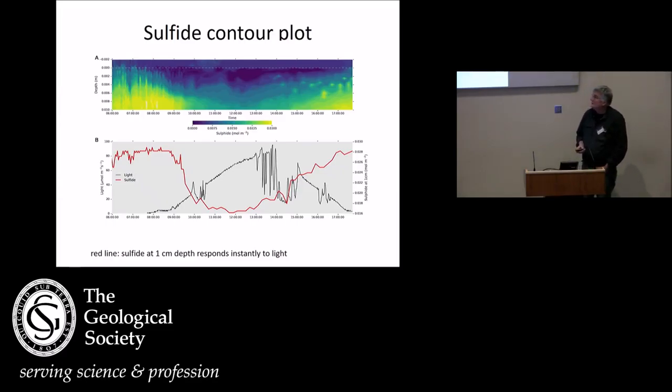These are sulfide micro-sensor data. We positioned the micro-sensor, pre-programmed it to measure every 15 minutes a profile during 24 hours. And so horizontal is the time of the day, vertical the depth, and the color indicates the sulfide level. And what you see is that as soon as the sun comes up, sulfide goes down. Here the sun comes up, this is light intensity, sulfide instantly goes down at even a centimeter depth.